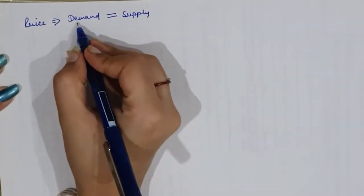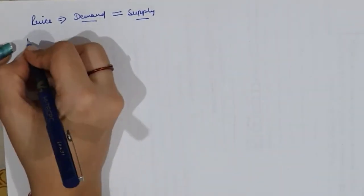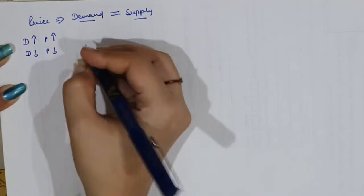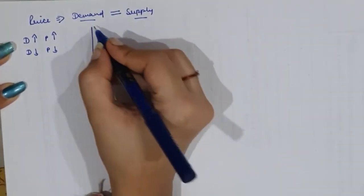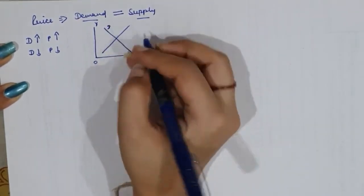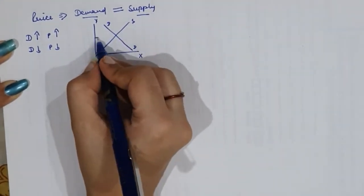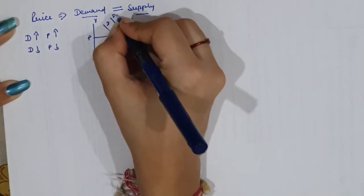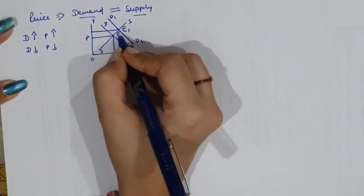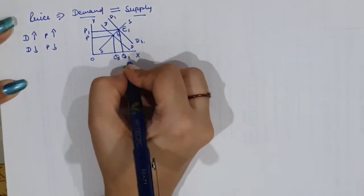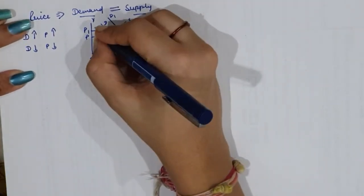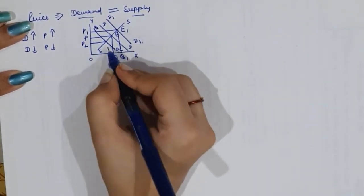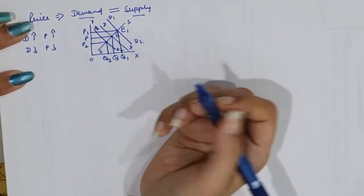What would be the effect of changes in demand and supply on price? If demand for a commodity rises, price will also rise. If demand falls, price will also fall. Using a diagram with DD as the demand curve and a supply curve at equilibrium price and output: if demand rises, the new demand curve is D1D1 and equilibrium shifts from E to E1, giving price OP1 at quantity OQ1. If demand falls, the curve becomes D2D2, price falls to OP2, and quantity to OQ2.